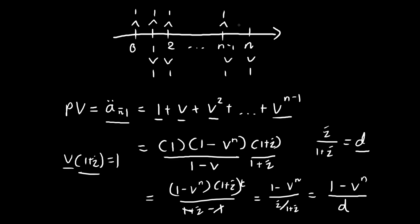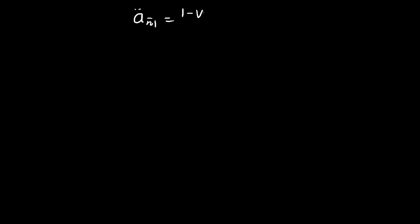So there we have our formula. Notice that this formula we've just derived is very similar to the annuity immediate formula, where for annuity immediate it equals (1 minus vⁿ) divided by i.